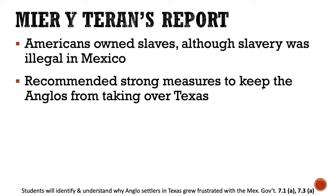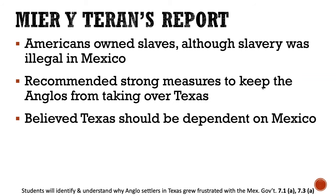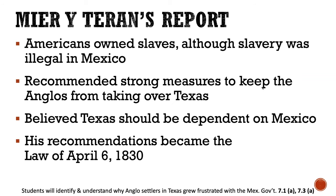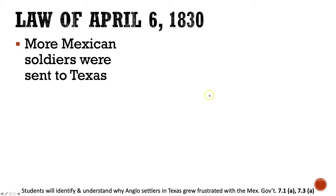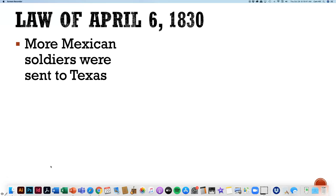Mier y Terán wanted to drop the hammer on these Anglo-Americans in Texas and make sure they understood what country they were living in and that they were living the life of Mexican citizens, not Americans. He believed Texas should be dependent on Mexico — buying Mexican goods and being more reliant on the Mexican government. His recommendations eventually became what is known as the Law of April 6, 1830. Remember that law, because you will hear about it a lot over the next couple of weeks. There were five basic parts of it to remember.